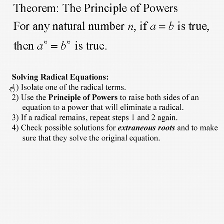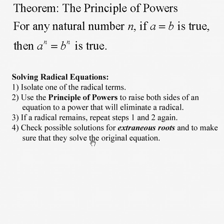Your job is to isolate one of the radical terms — sometimes there are two radicals in the same equation, so we need to get one by itself. Then use the principle of powers to raise both sides to a power that will eliminate the radical. If a radical remains, repeat those steps. We must check our answers — it's essential because we can get extraneous roots, which means an extra answer that may or may not work. Checking is the only way we'll know.